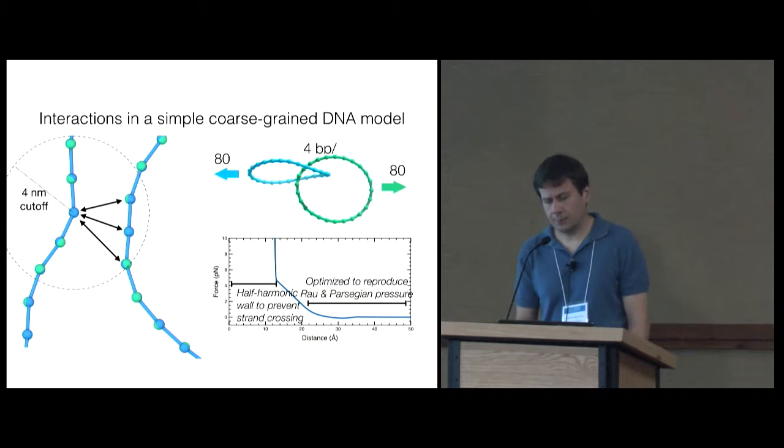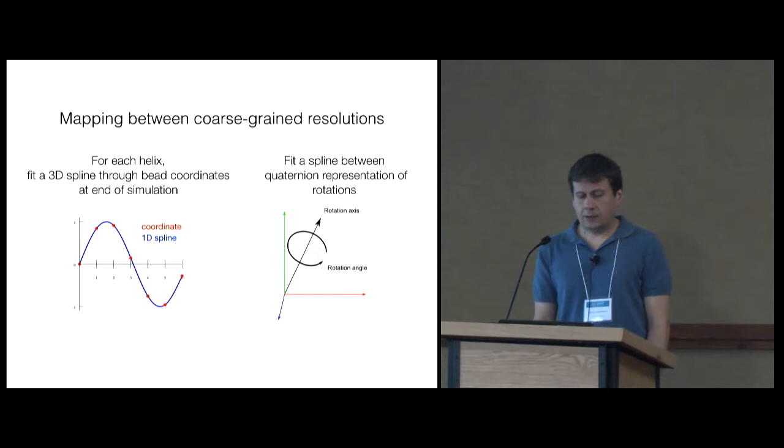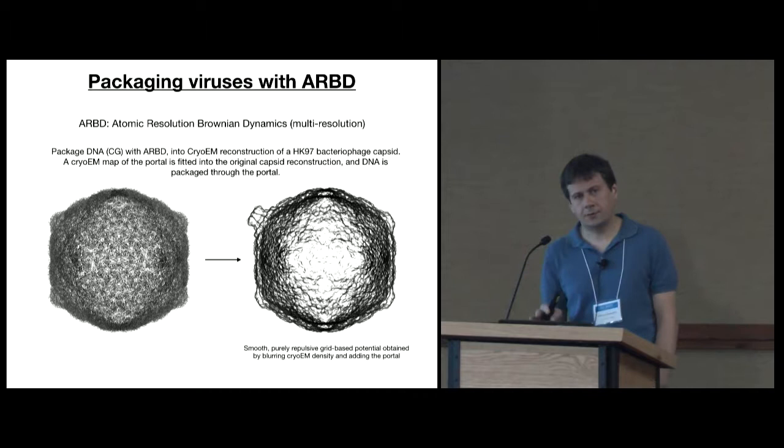One last thing here is we're also worried about strand crossing. This is something that happens frequently in coarse-grained models. So we made sure that the DNA strands cannot pass through one another when we pull on them. A little bit of technical detail on how we switch resolution. We basically map the position of the beads to a 3D spline and then interpolate. We do the same in angular space.